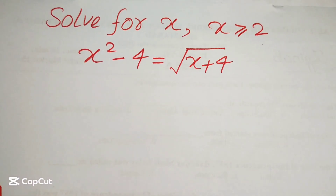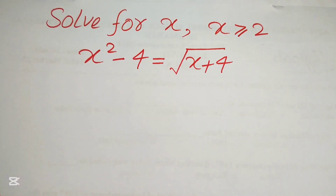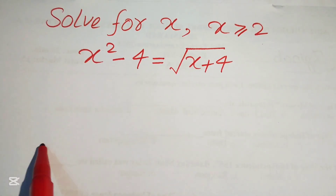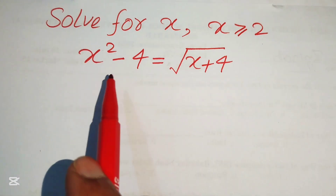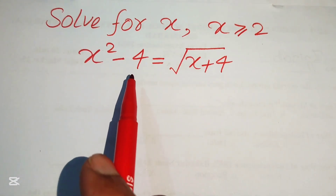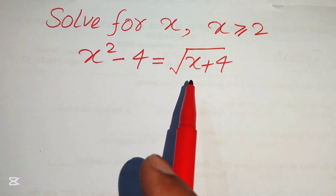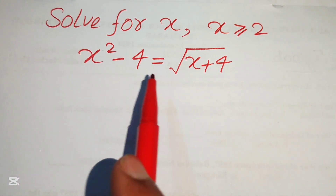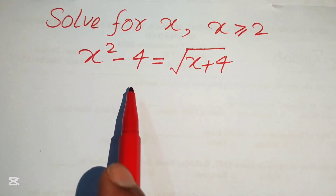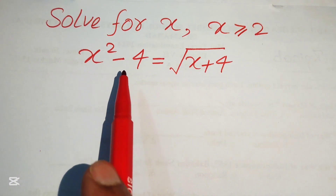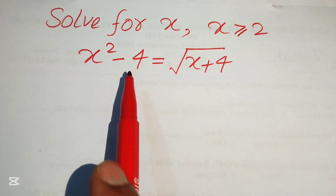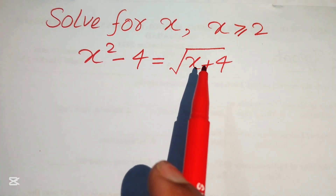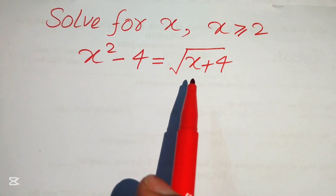Hello everyone. How to solve this nice algebraic equation? We have x squared minus 4 equals to square root of x plus 4. We solve this equation for the values of x if x is greater than or equal to 2.